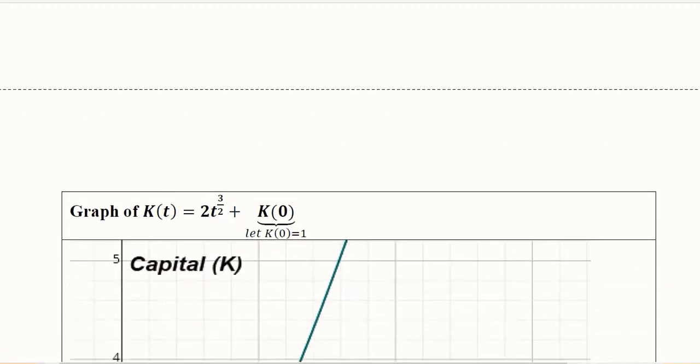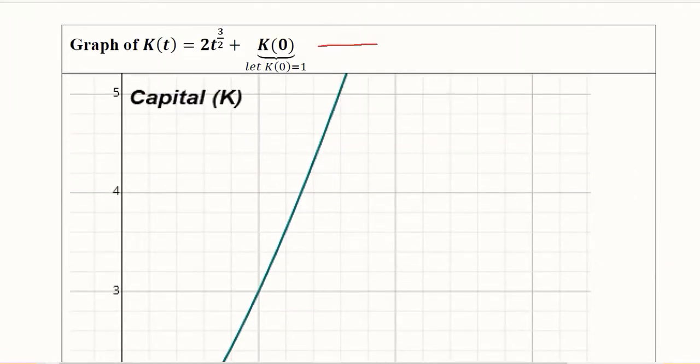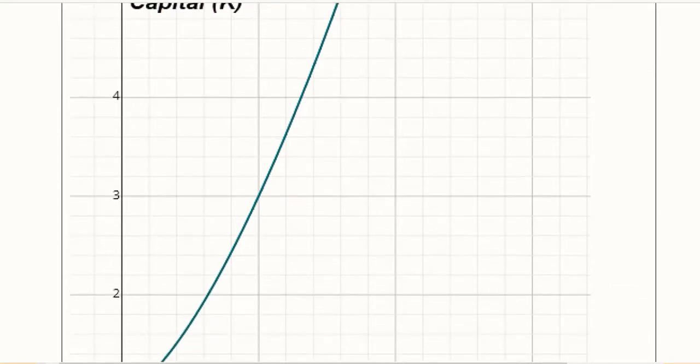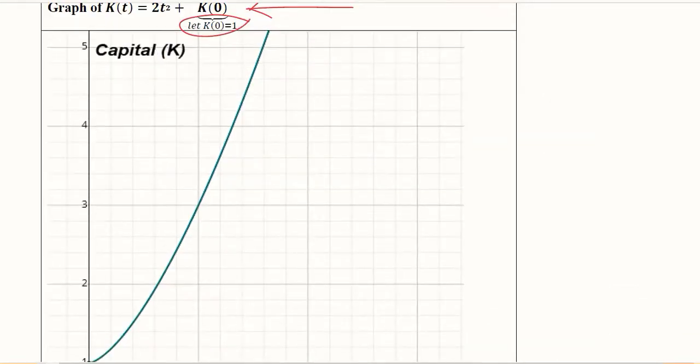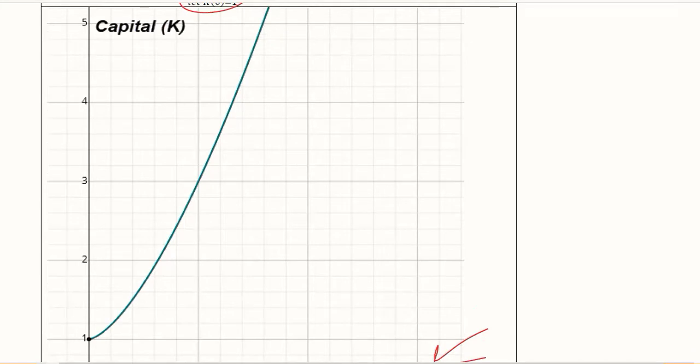Now we make a graph by considering another assumption regarding K(0). Let us assume that K(0) is not equal to 0; it is equal to 1. When it is equal to 1, we can make the graph like this. On the x-axis we have the time variable, and on the y-axis we have capital, and we are plotting this graph that we developed.